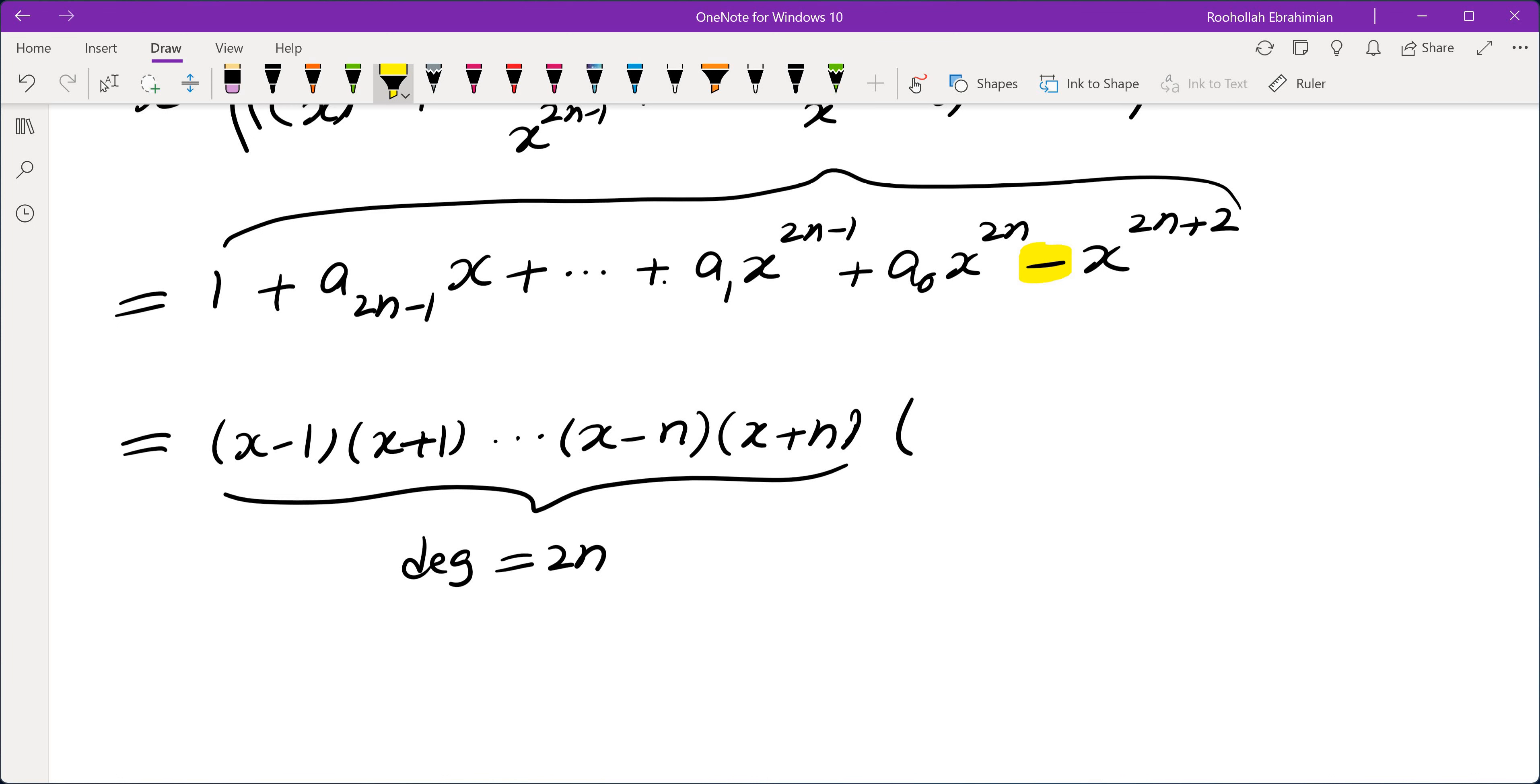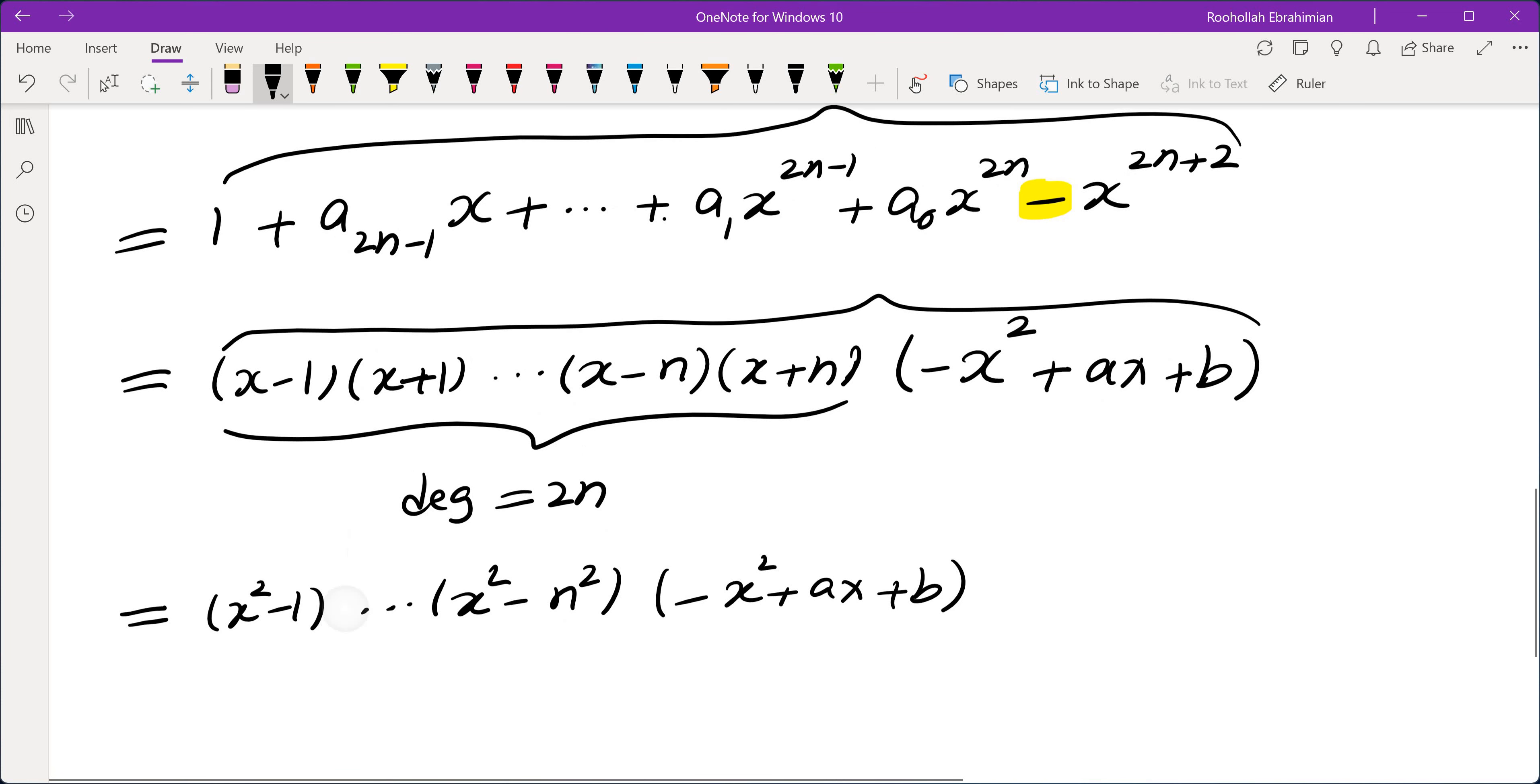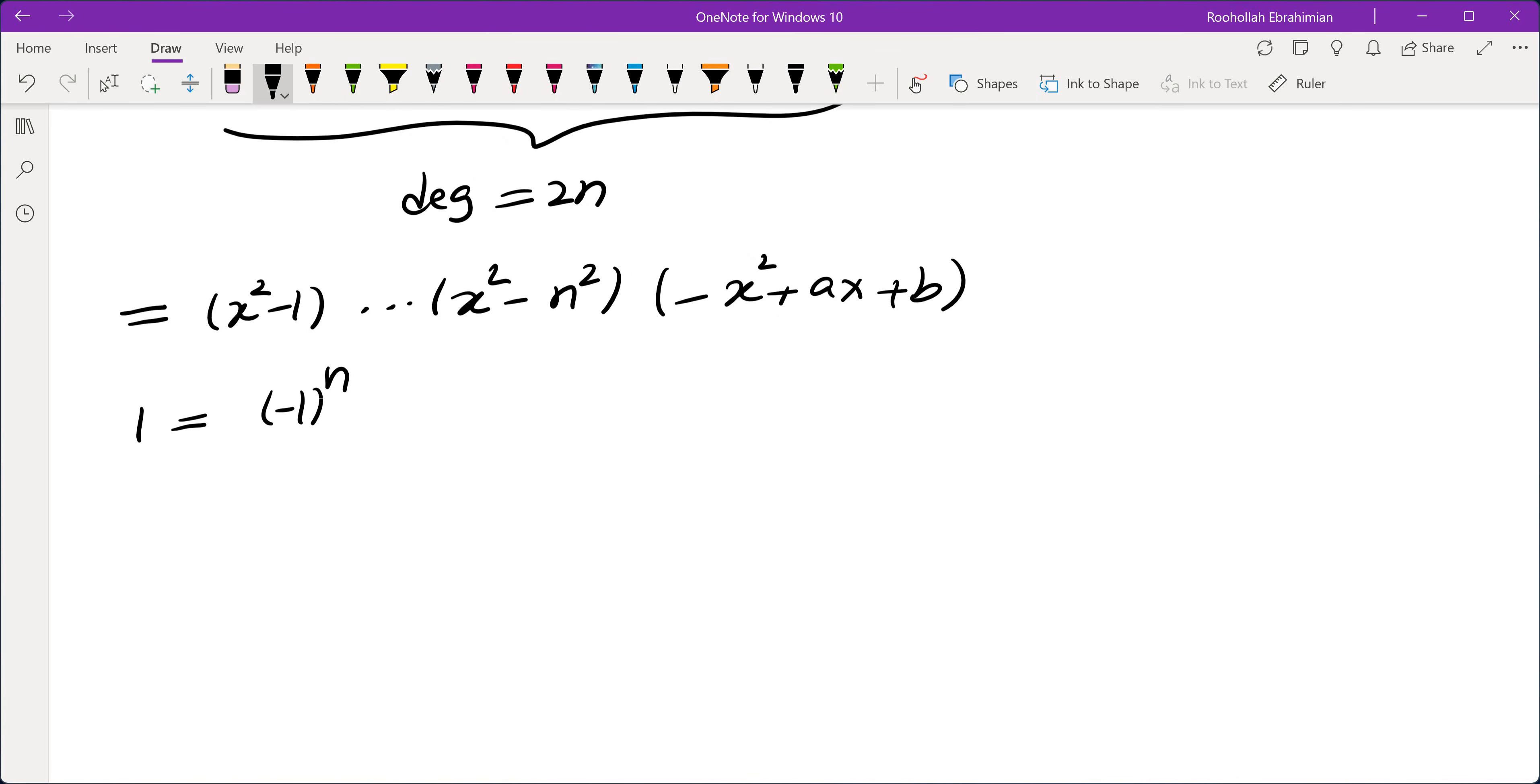So what is the quadratic that is left? Well, the leading coefficient is negative 1. It has to start from negative x squared. And let's say the rest is ax plus b. We'll figure out what a and b are. Let's now multiply to see what we get. If we multiply that, we get x squared minus 1, all the way to x squared minus n squared, minus x squared plus ax plus b. We're going to compare coefficients of the two sides. The constant on one side is 1. The constant on the other side is negative 1 to the power of n times n factorial squared, and then times b. Negative 1 to the power of n is 1 because n is even, so b is in fact 1 over n factorial squared.